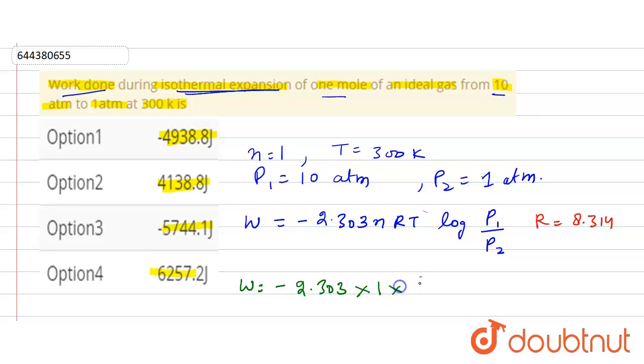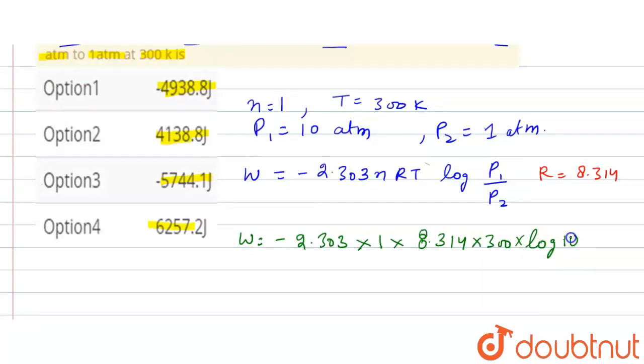And P1 is 10 divided by 1, so here we get negative 2.303 multiply by 1 multiply by 8.314 multiply by 3, multiply by log of 10 divided by 1.